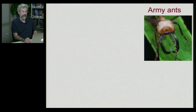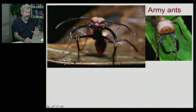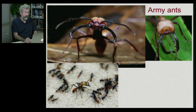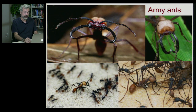Army ants are another amazing example. They have really fierce mandibles ready to protect the nest against invaders, standing guard over other workers who are bringing food back. They also help sometimes to capture very large prey. They cannot reproduce themselves and have a very specialized role within the society.